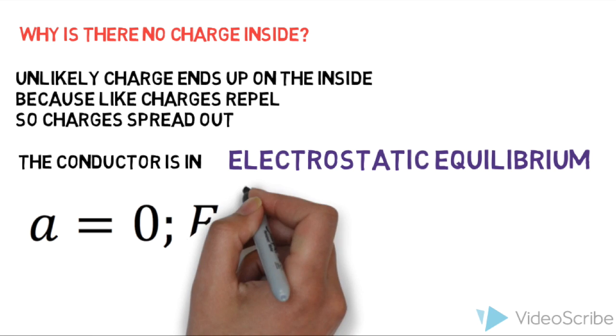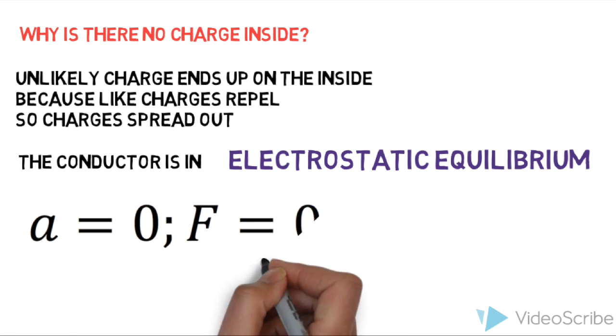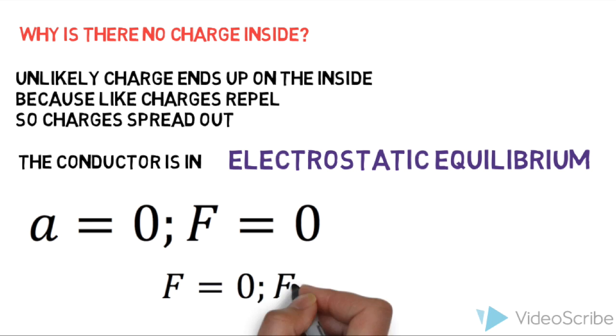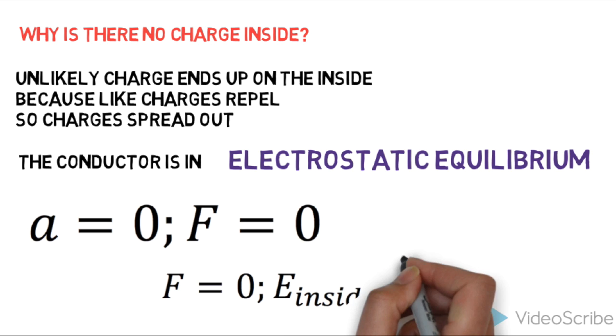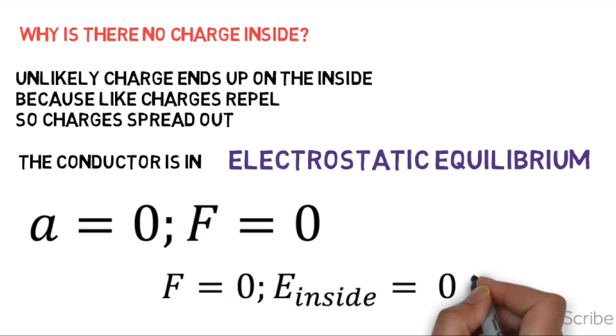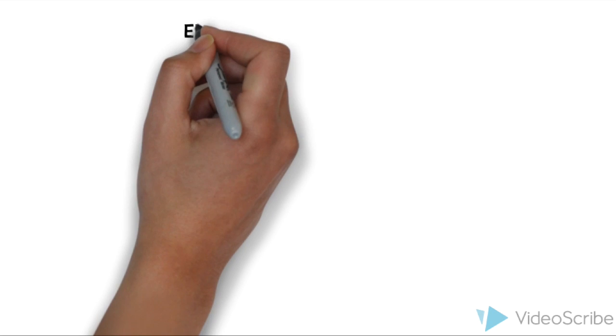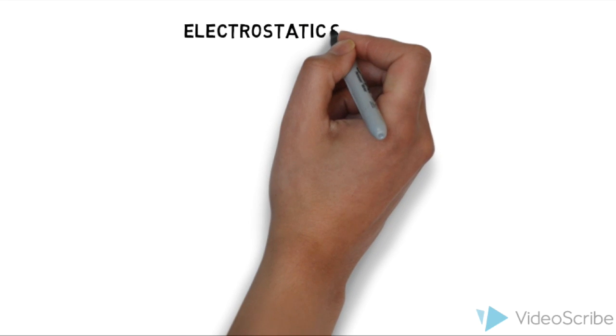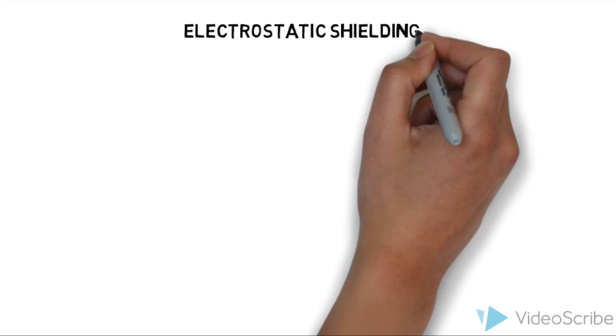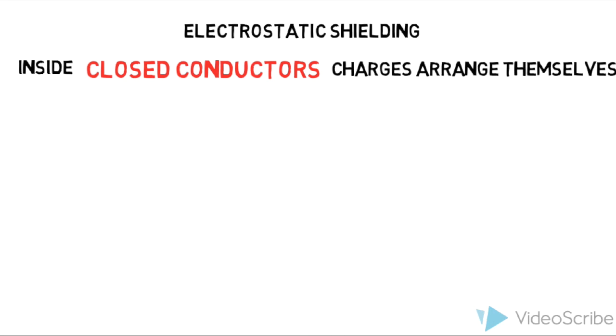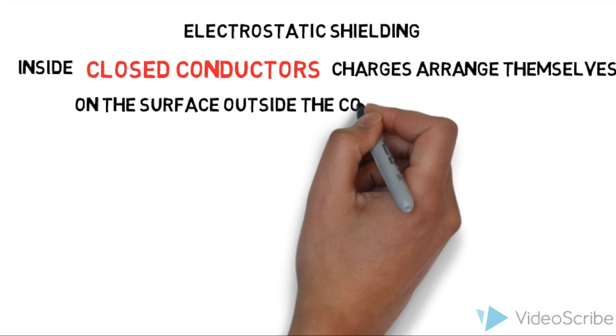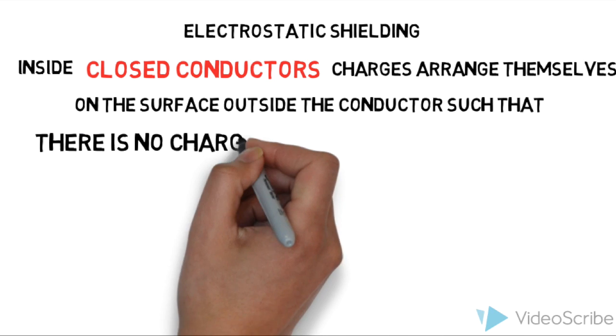This is called electrostatic shielding. Inside closed conductors, charges arrange themselves on the surface outside the conductor such that there is no charge inside the conductors and no electric field inside the conductors, protecting the insides from electrostatic and electromagnetic influences. These closed conductors are called Faraday cages, invented and discovered by the great physicist Michael Faraday. Now you know the answer to the problem. Tell the magical creature I picked the metal cage because it is a Faraday cage and now I know physics.